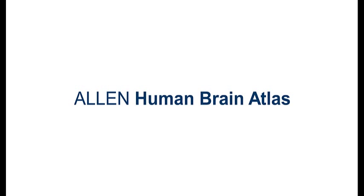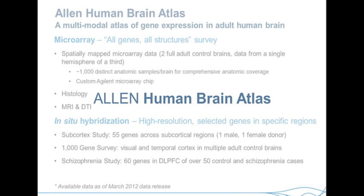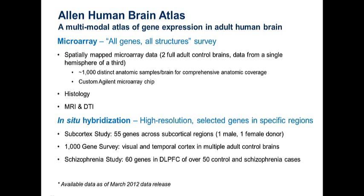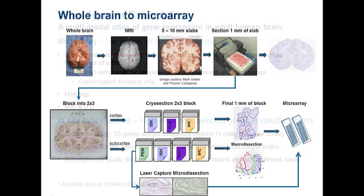Before I show you the upgrades, I want to talk a little about the Human Brain Atlas. We have microarray data from two full adult control brains and two from a single hemisphere — approximately 1,000 distinct anatomic samples from the two full brains, and about half that for each single hemisphere. We also have histology, MRI, and DTI combined to show gene expression throughout the brain. We also have five in-situ hybridization studies: a subcortex study, a thousand-gene survey, a schizophrenia study, an autism study, and a neurotransmitter study.